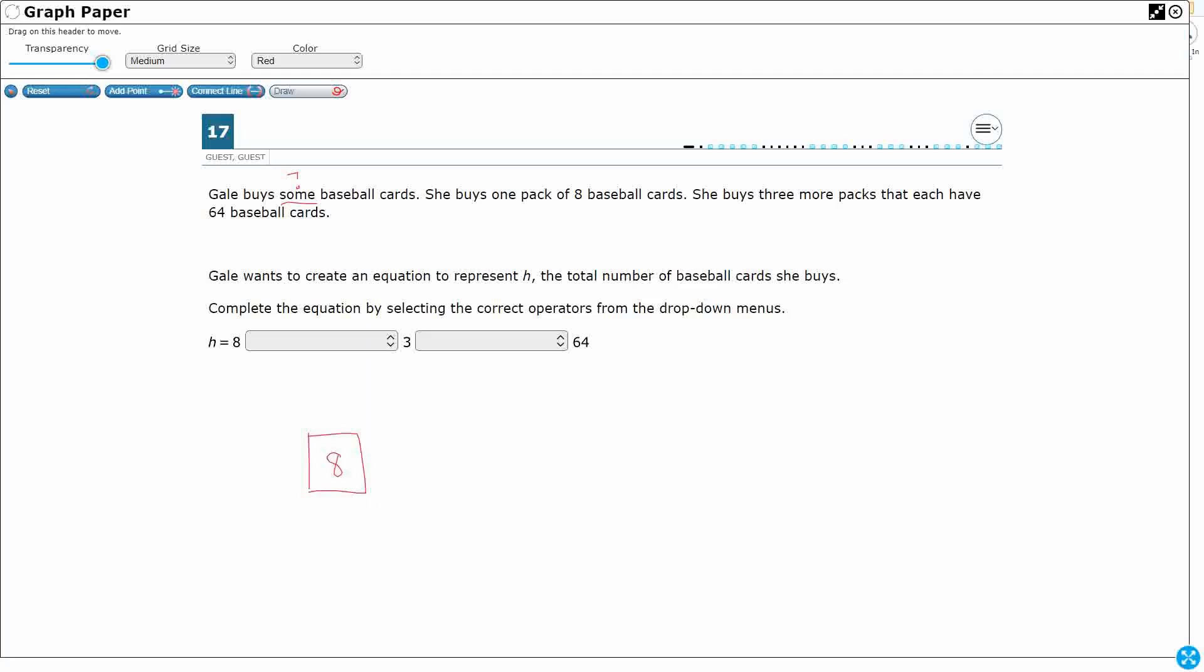All right, so let's represent this right here. All right, so she's got a pack of eight. So we've got that right there. She buys three more packs that each have 64.